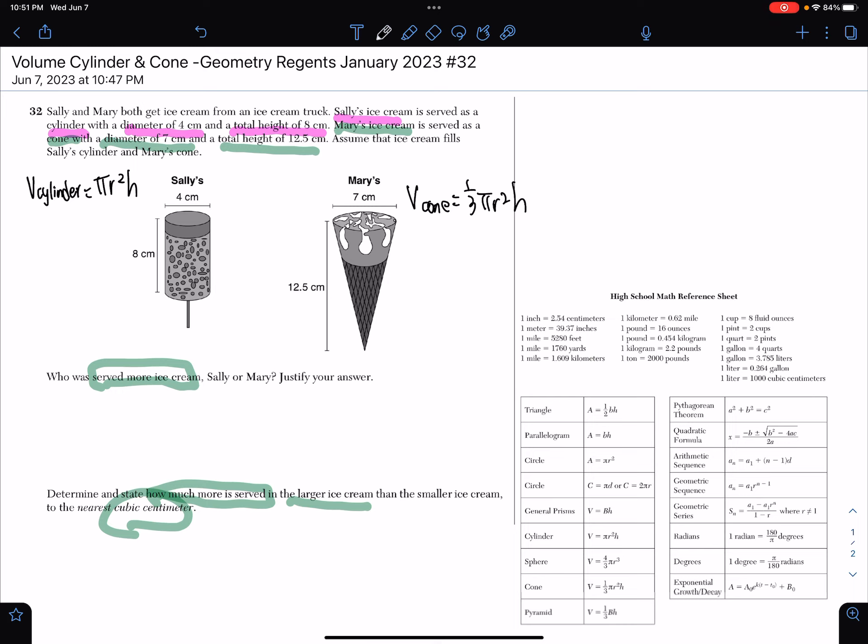Anytime I mention a fraction you need to make sure you put parentheses in the calculator. Now let's start labeling the diagram. Sally's cylinder has a diameter of 4, which means immediately you should find the radius. The radius is half the diameter, so that's 2 centimeters.